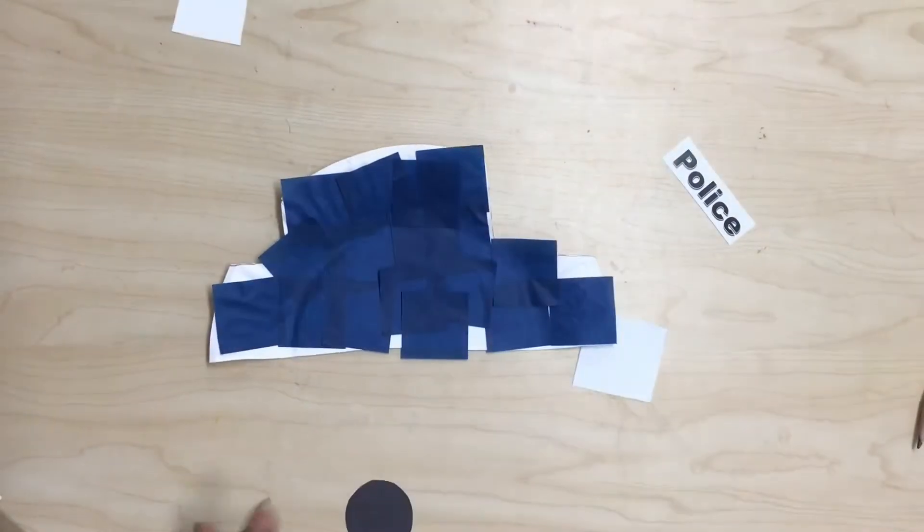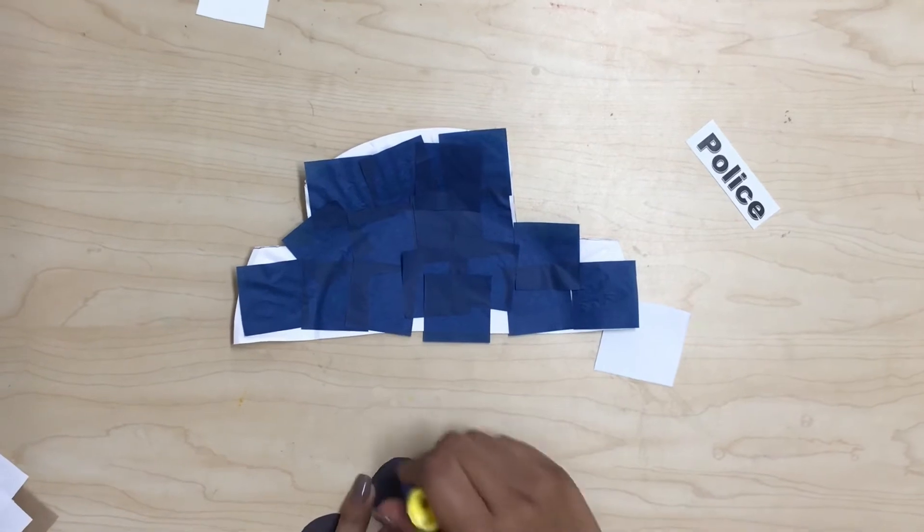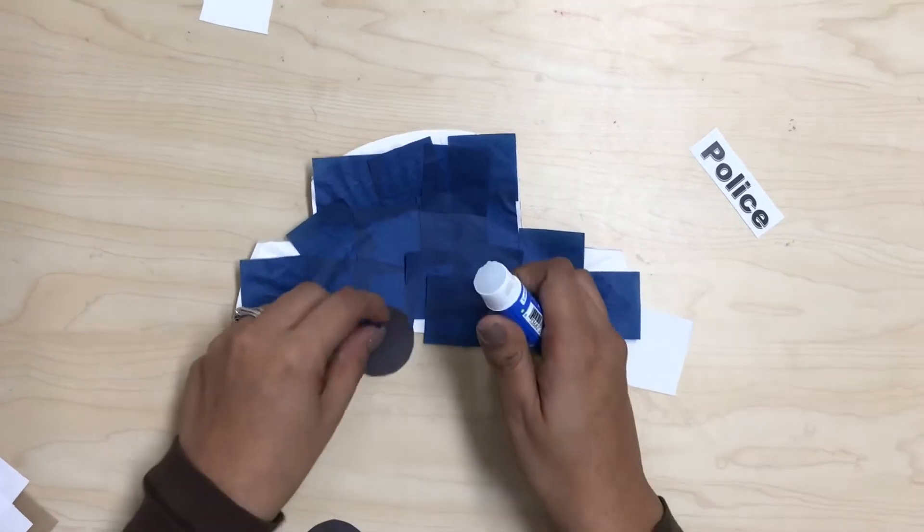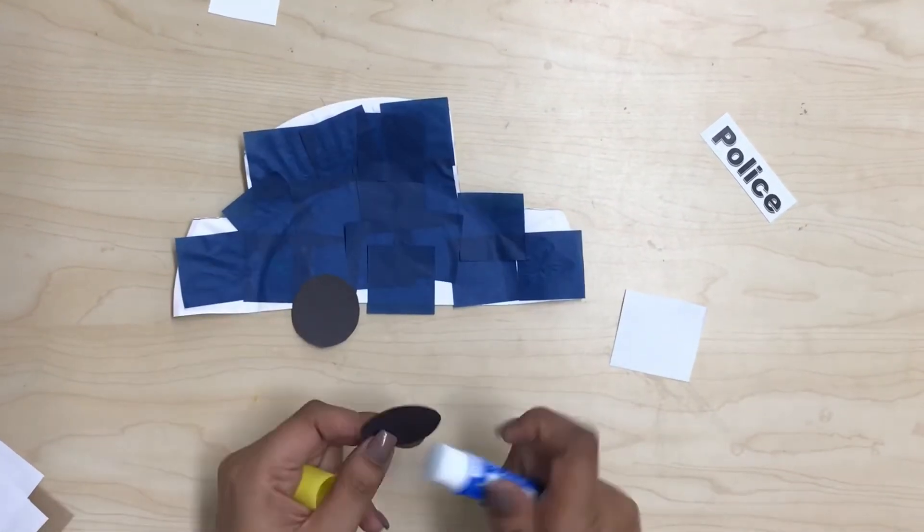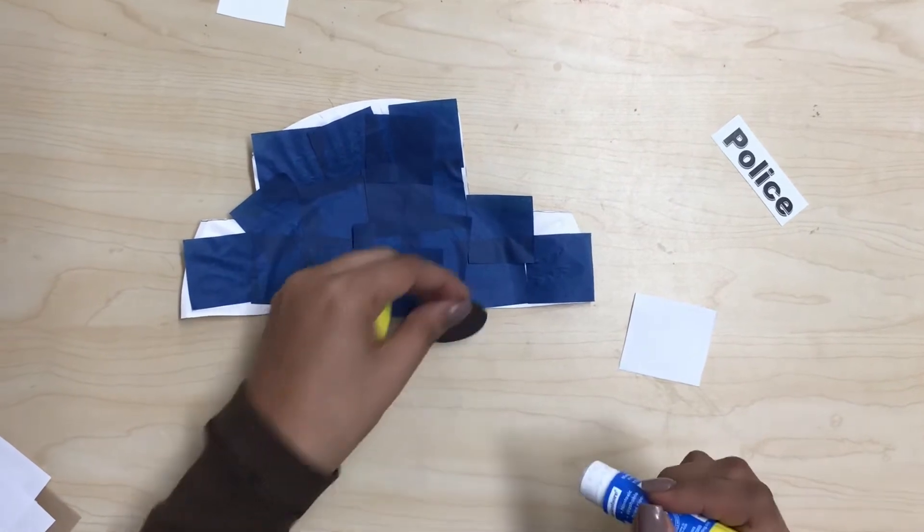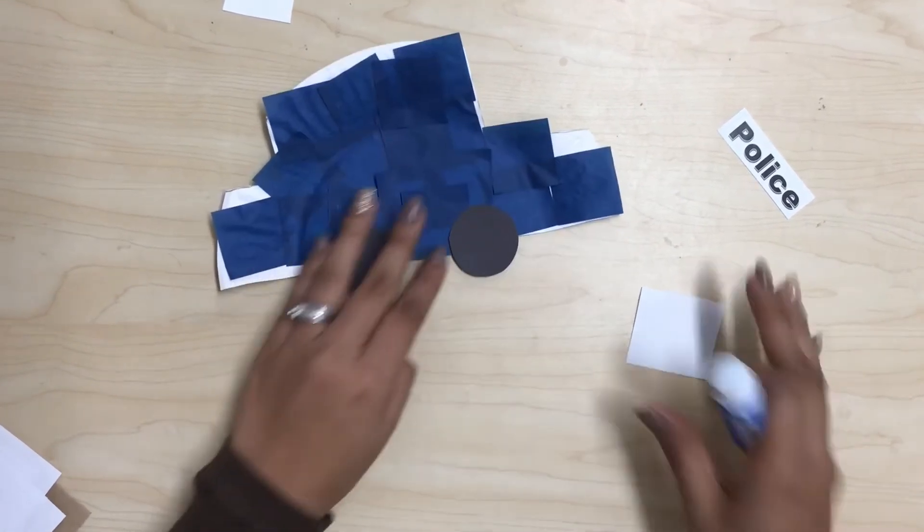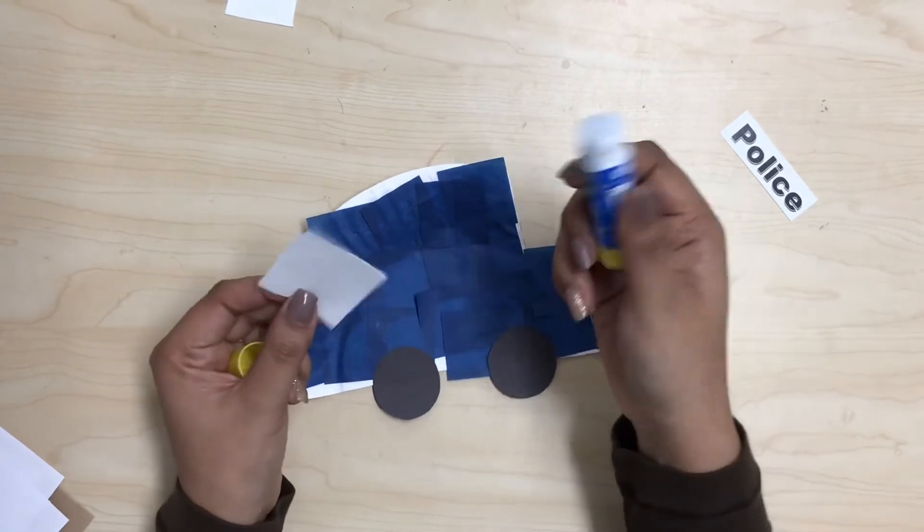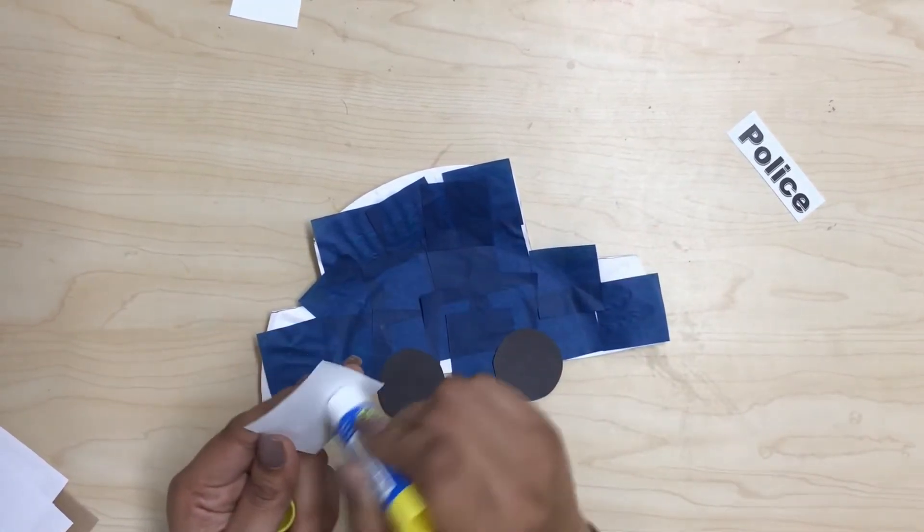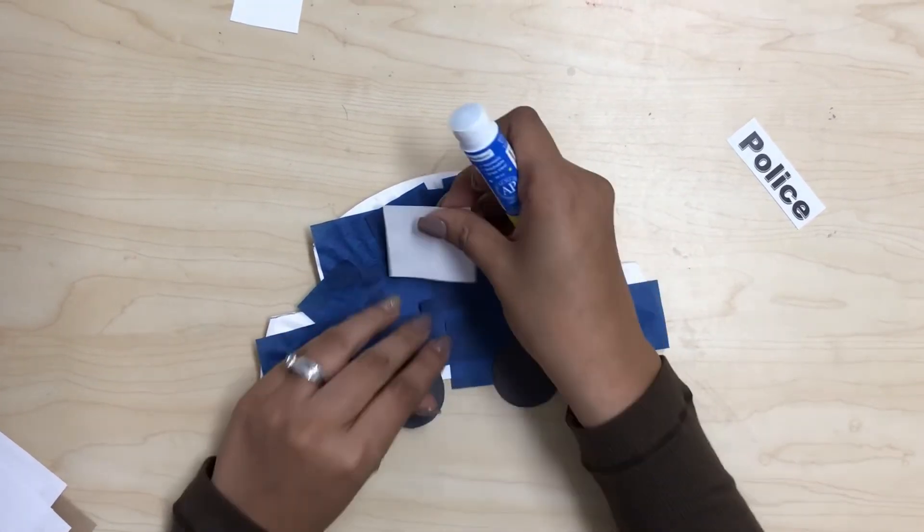Once we put all over our tissue paper, we're going to glue the black circles for the wheels, one, two. Then we are going to use this white square and it's gonna be the window of our police car, and I'm gonna put it here.